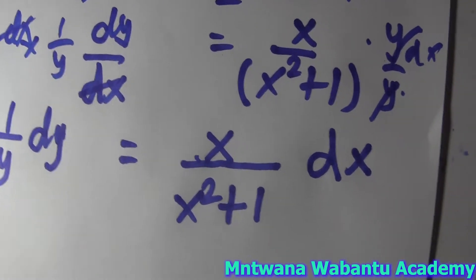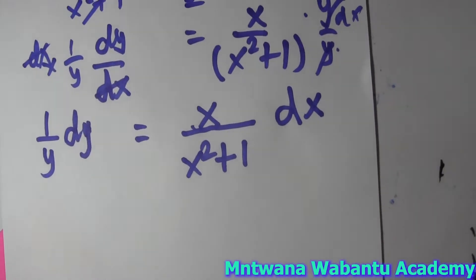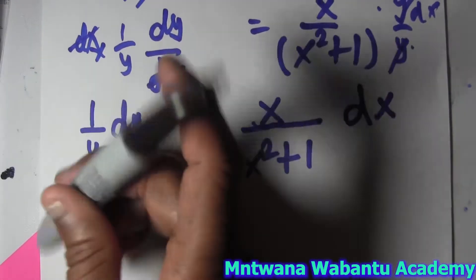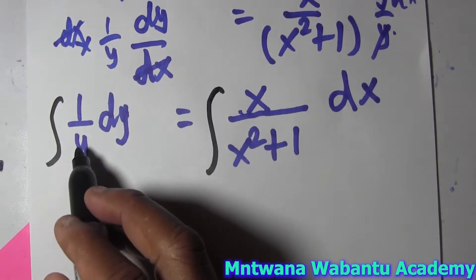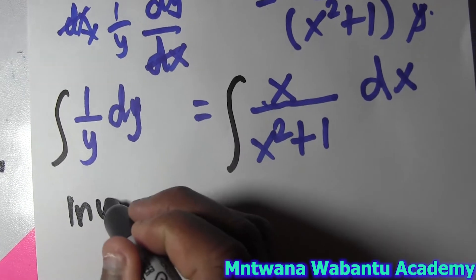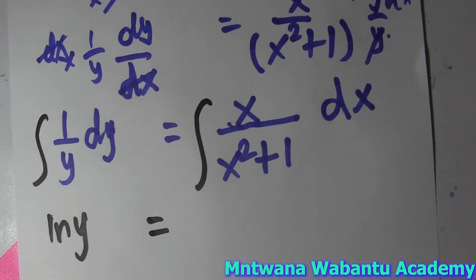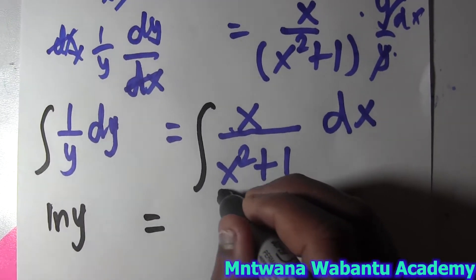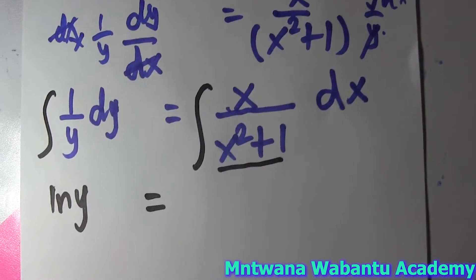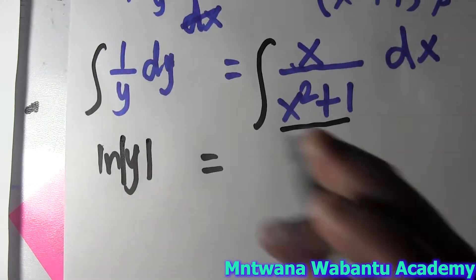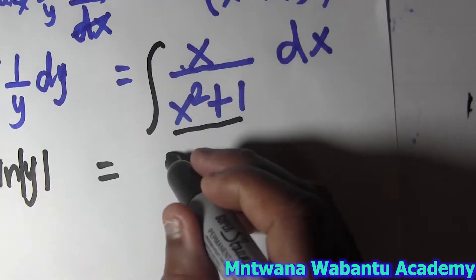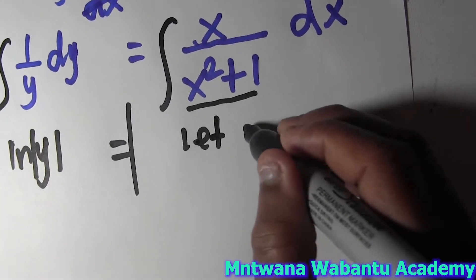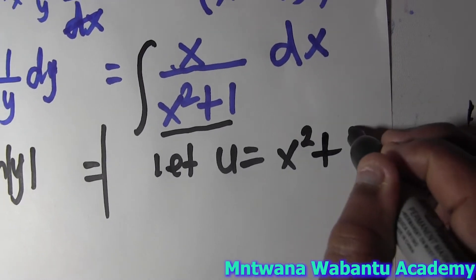Now we're going to integrate both sides to get the values of x and y. Integrating 1/y on the left gives ln|y|. On the right we have to do substitution. I'm going to do a u-substitution on the right-hand side. Remember the left side is ln|y| - it has to be absolute value because whenever you integrate, anything in front of ln has to be absolute.